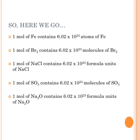One mole of sodium oxide (Na₂O) contains 6.02 times 10 to the 23rd formula units of Na₂O because it is an ionic compound made of a metal and a non-metal. Notice in every one of these statements there is a number, a unit, and a substance — those three components are critical from here on out.